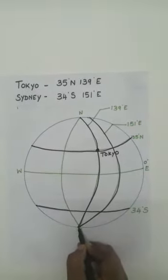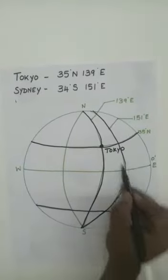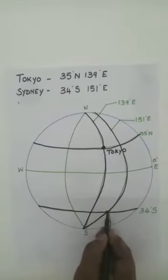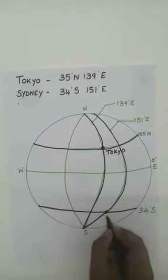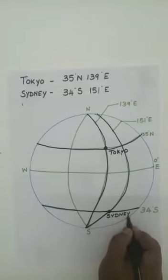What is the intersection of Sydney here? 34 degrees south and 151 degrees east. This is the intersection point. This place is Sydney.